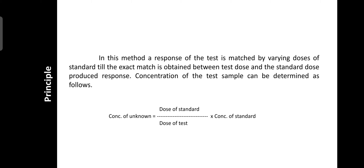Regarding the principle of the matching bioassay method: first, record at least two responses of the test sample and match them with standard responses in increasing doses. Standard responses are recorded until one of them matches one of the test responses. When an exact match is found, recording of standard drug responses is stopped. The concentration of the test sample is determined using the formula: unknown concentration equals dose of standard divided by dose of test (at the matching point), multiplied by the concentration of standard.